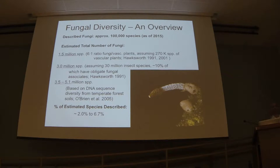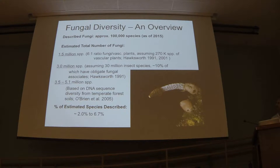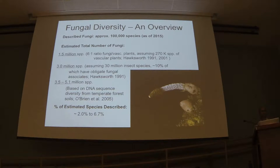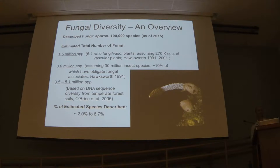If you assume a constant relationship between the diversity of insects and the diversity of fungi, we maybe think there are closer to 3 million fungi, based on the fact that there are 30 million insect species and about 10% of those have some sort of obligate fungal associate — either in their gut helping manufacture food, or a parasite growing on their thorax. The most recent plausible estimate gives a ceiling of about 5 million species, though I personally think that's an underestimation and we're probably off by an order of magnitude.